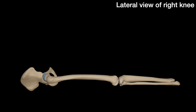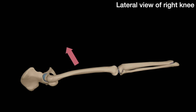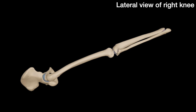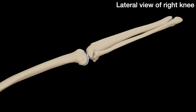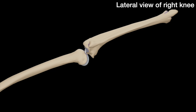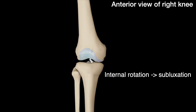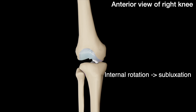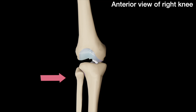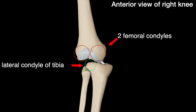Now let's see how the pivot shift test works. Again, start by flexing the hip to 30 to 40 degrees. In the case of an ACL deficiency, internally rotating the tibia will allow it to translate anteriorly. When a valgus stress is also applied, the tibia is further subluxed, causing the lateral condyle of the tibia to be trapped between the two femoral condyles.